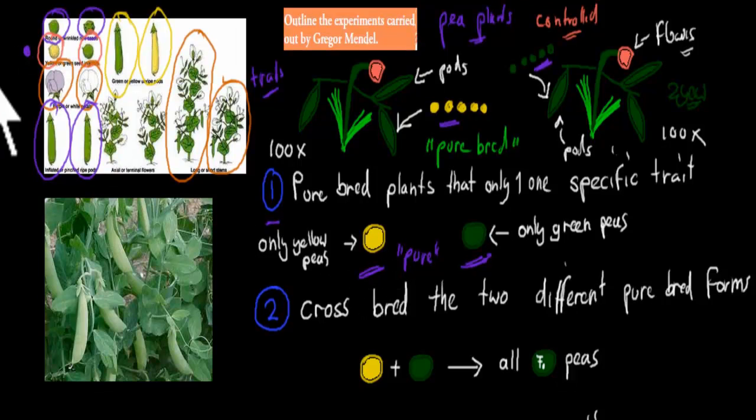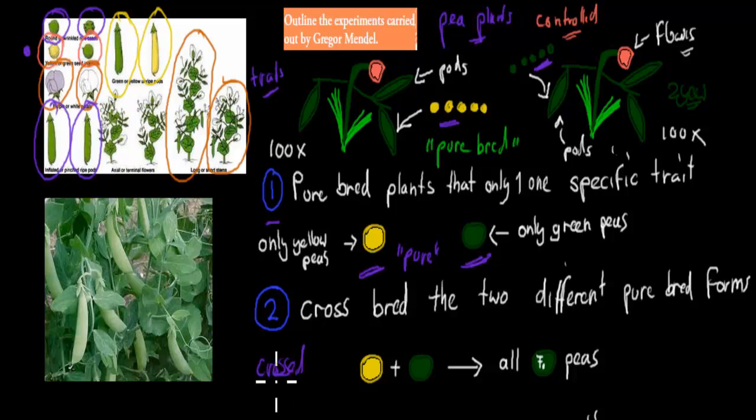And what he did then, he actually crossed the pure peas. So he crossed one of the yellow peas with the green peas. And what happened, he created a mono-hybrid cross. What I mean by that is mono means one. And hybrid means that it's a hybrid, it's not pure. And it's a hybrid between one different type of trait.